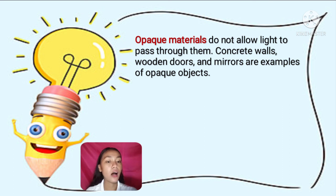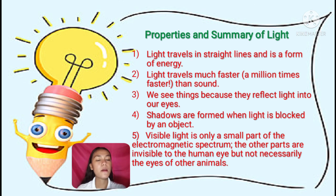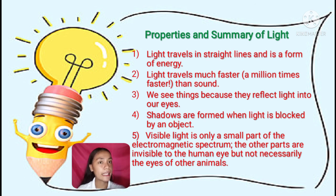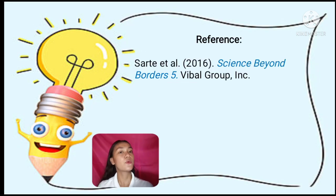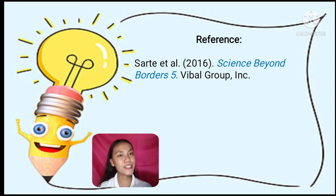Here is the summary of the properties of light. First, light travels in straight lines and is a form of energy. Second, light travels much faster — a million times faster — than sound. Third, we can see things because they reflect light into our eyes. Fourth, shadows are formed when light is blocked by an object. And fifth, visible light is only a small part of the electromagnetic spectrum — the other parts are invisible to the human eye, but not necessarily to the eyes of other animals. That would be all for my discussion about light and its properties. I hope you learned something — thank you so much for watching.